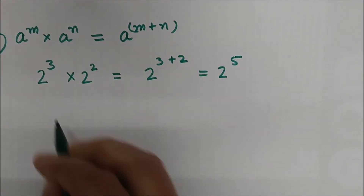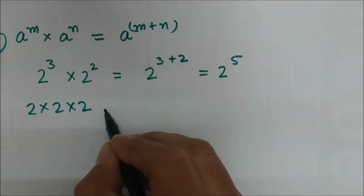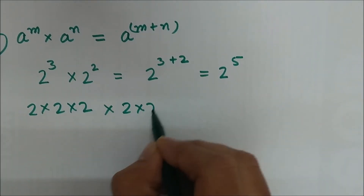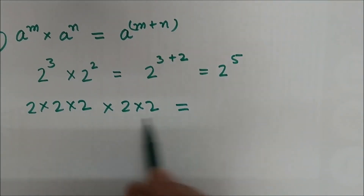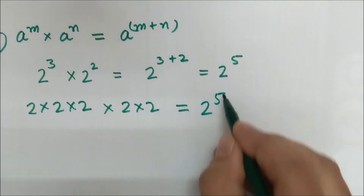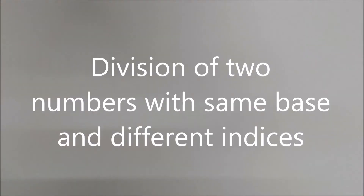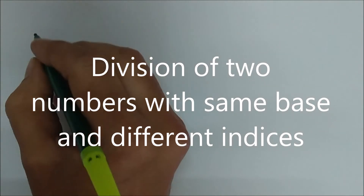We can verify this: 2 into 2 into 2 (three times) multiplied by 2 into 2 (two times) gives us 2 multiplied five times, which equals 2 raised to the power 5. So we simply add the indices in the case of multiplication.